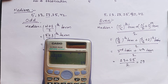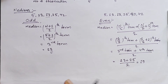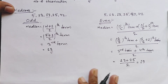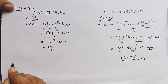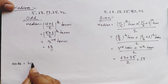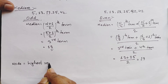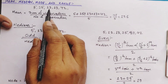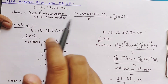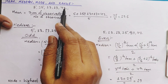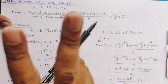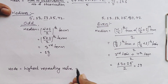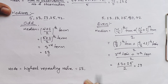We have calculated mean and median; now it's time for mode. The mode is the highest repeating number. In the given question, the highest repeating value is 13, which is repeated twice. If 42 had also appeared twice, then 42 would also be a mode. So mode equals 13.